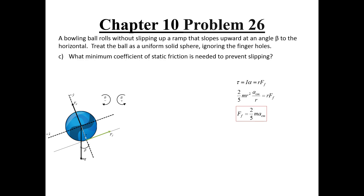We now want to find the minimum coefficient of static friction needed to keep the ball from slipping. We need the coefficient large enough to ensure the ball rolls rather than slides. From a previous chapter, the force of static friction must be less than or equal to the coefficient of static friction multiplied by the normal force. From part b we already have expressions for the frictional force and center of mass acceleration, so the only remaining unknown is the normal force.